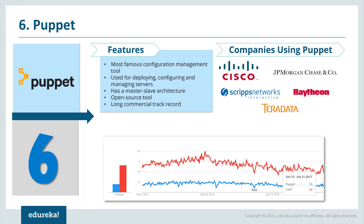Puppet is a configuration management tool used for deploying, configuring, and managing servers. It is one of the most famous tools for configuration management, around since 2005, and holds a major market share. It has a master-slave architecture and is an open source tool with a long commercial record. Companies using Puppet include Cisco, JP Morgan Chase, Raytheon, and Teradata. On Google Trends, Chef appears slightly ahead of Puppet because Chef is relatively newer, but Puppet still holds a major market share.